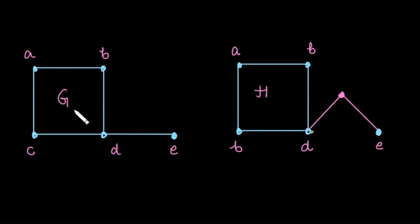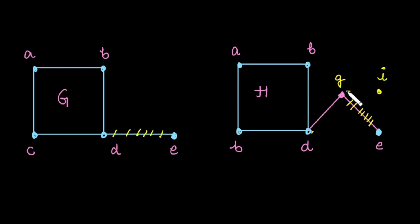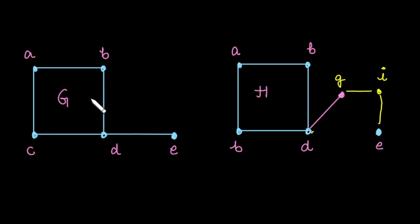For example, in graph G it has five vertices and five edges. We can perform a subdivision on graph G to get graph H. For the edge D to E, if you remove this edge and add one new vertex — call it G — and connect that vertex with D and E, this operation is called a subdivision. Similarly, if you remove edge GE and take a new vertex I, joining G to I and I to E, this is also an elementary subdivision.